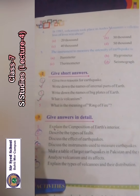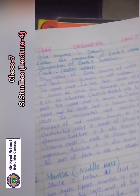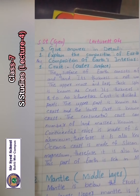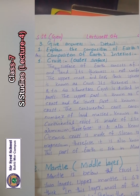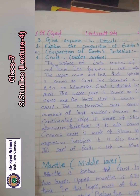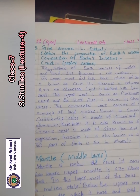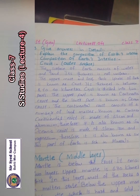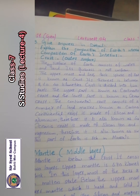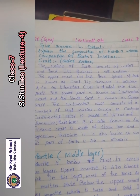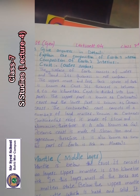Question number one: Explain the composition of earth's interior. Write the question at the top, then give heading number one — Crust: Outer Surface. The surface of earth consists of water and dry land. Its thickness is not uniform. The uppermost and least thick sphere of earth is known as crust. Its thickness is between 8 to 40 kilometers.